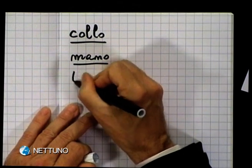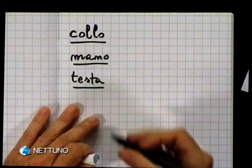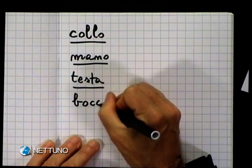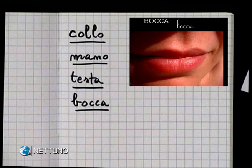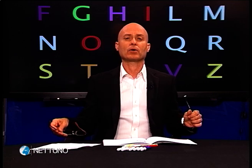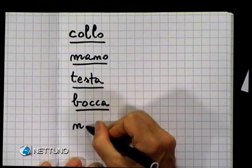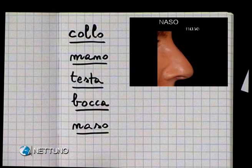Cos'è questa? Questa è una testa. È la mia testa. Scriviamo anche la parola testa. Scriviamo anche la parola bocca. Naso. Proseguiamo con un'altra parte del mio corpo. Cos'è questo? Questo è un orecchio. Scriviamo la parola orecchio.